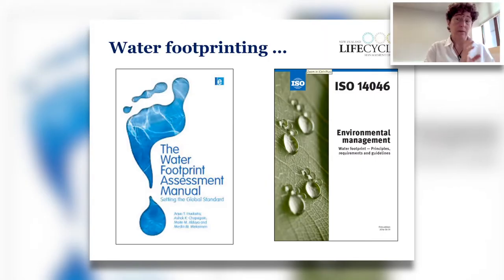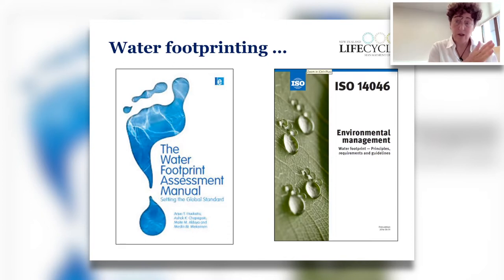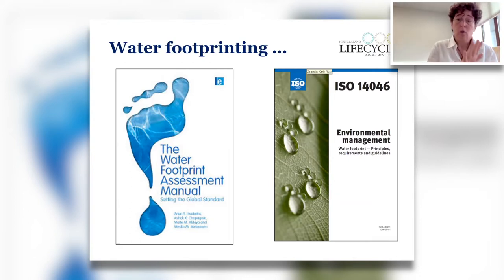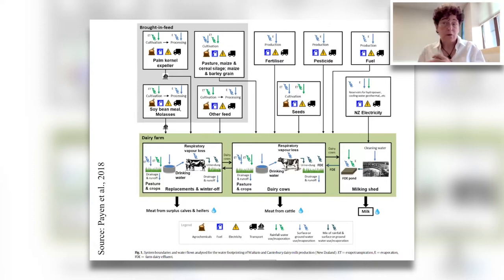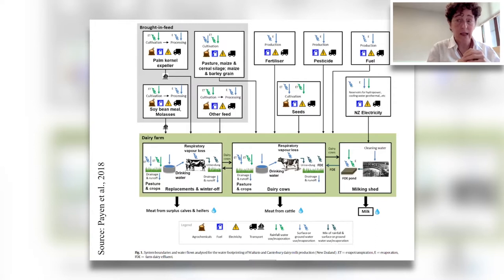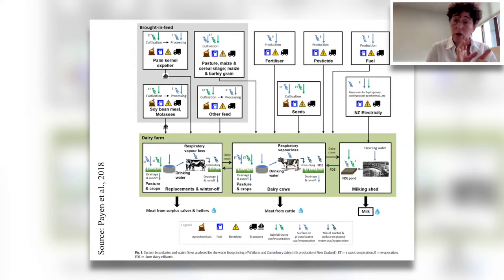Two main approaches have really evolved in the water footprinting space. The first, developed in the early 2000s, is the Water Footprint Network approach — their manual is shown on the left here from 2011. On the right we have the ISO water footprint standard, published in 2014, which is based on life cycle assessment. In fact, both approaches use a life cycle perspective, illustrated by this diagram from the water footprint study of New Zealand milk production that I'll go through in more detail towards the end.